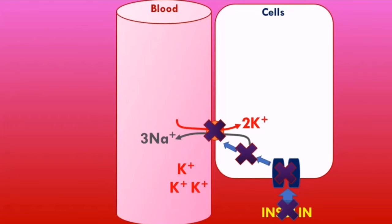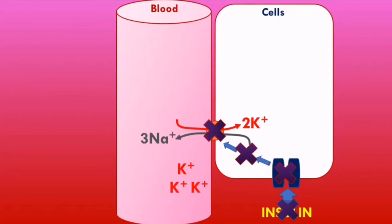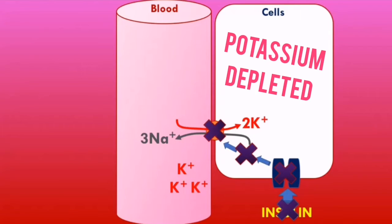Remember, even though the serum potassium level is increasing, the intracellular potassium level is decreasing — so the effective potassium available to the cells is decreasing. This means that patients in DKA are actually potassium depleted.